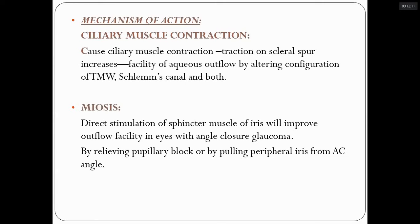In angle-closure glaucoma, pilocarpine is no longer given when IOP is very high because it does not act effectively when the sphincter muscles are paralyzed by very high IOP. We start these drugs only when IOP is brought to near-normal levels. It directly stimulates the sphincter muscles of the iris, improving outflow in angle-closure glaucoma by relieving pupillary block or pulling the peripheral iris away from the angle structures.